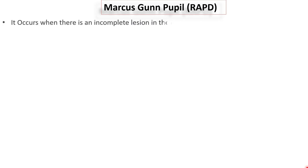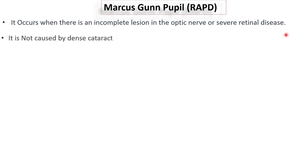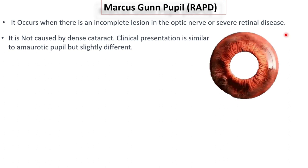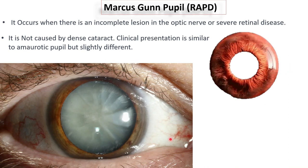Let's know what is RAPD. RAPD, i.e. relative afferent pupillary defect, is also known as Marcus Gunn pupil and it is caused by an incomplete optic nerve lesion or severe retinal disease. Importantly, it is never caused by a dense cataract. In a clinical setting, the clinical presentation is similar to an amaurotic pupil but more subtle.